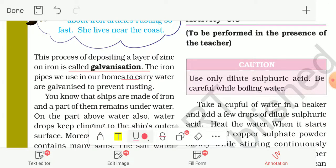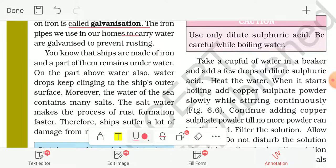The iron pipes we use in our home to carry water are galvanized to prevent rusting. You know that ships are made of iron and a part of them remains under water. And the part above the water also, water drops keep clinging to the ship's outer surface.